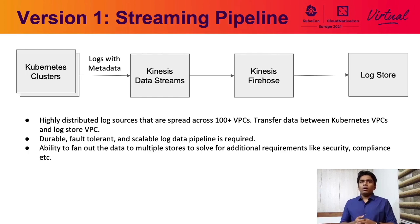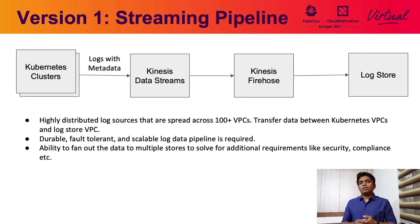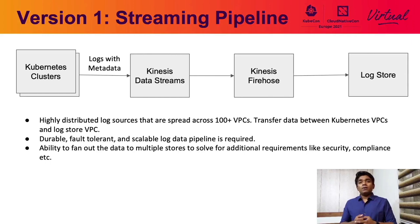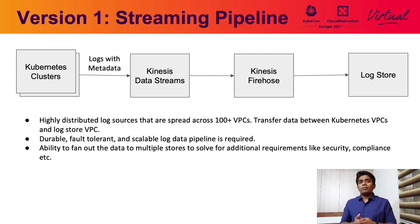We have a centralized persistent log store where all customers can see and query log events. We wanted a common path to transport all the logs, which would simplify the connectivity between the VPCs containing the Kubernetes clusters and the VPCs containing the log store. You only have to expose the log store to the pipeline instead of all the clusters, and this helps us avoid sending log events over the internet. Sending data over the internet is very expensive, and we can cut down costs drastically by sending data through AWS's network only. The logs can also be read from Kinesis data stream using a consumer, and this provides an opportunity for other applications — especially security, compliance, and analytics — to read the raw log data.